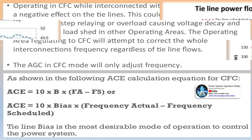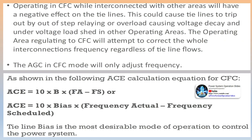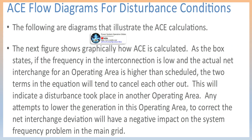ACE flow diagrams for disturbance conditions: when a tie line is removed from service, the generation dispatcher must remove that line from the AGC calculations and manually enter a zero flow. When telemetry is lost on any tie line, it is good practice for the generation dispatcher to manually enter a value equal to the flow on the line. This value should be updated at least every 10 minutes and should be done as soon as possible after a system change.